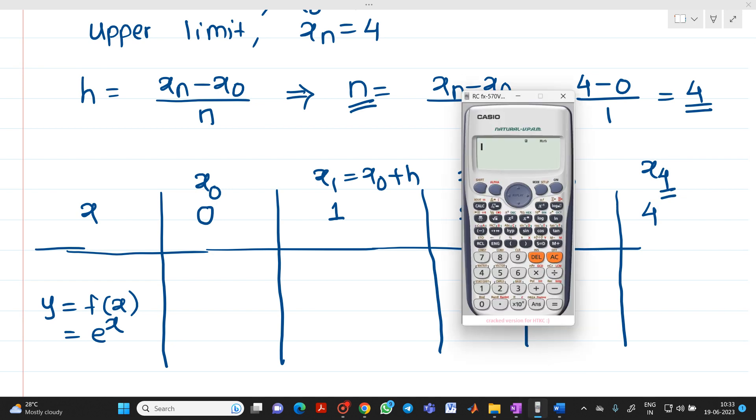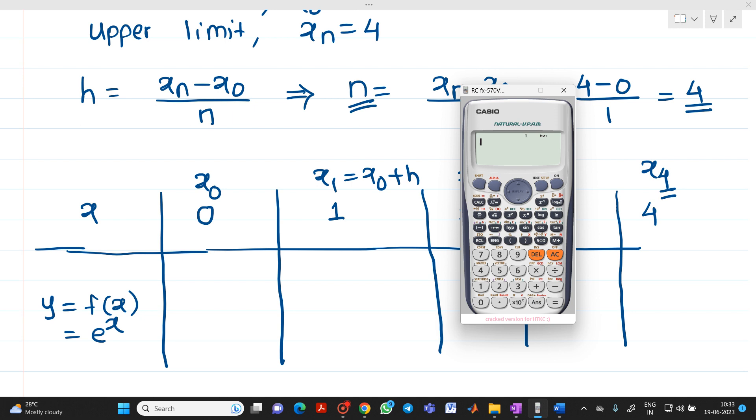Now what to do here? First keep the calculator in radian mode. We have to calculate e raised to x. Press shift and the ln button to get e raised to. Put alpha and the x symbol. The first value at x equals 0 gives answer 1.